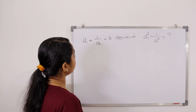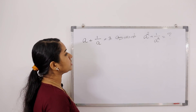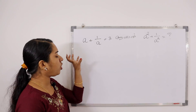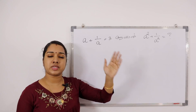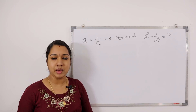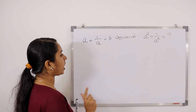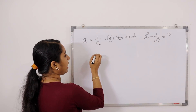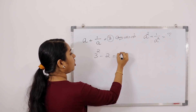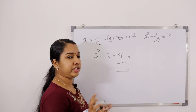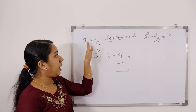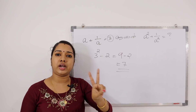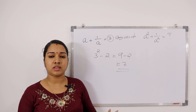Let's look at this: a plus 1 by a sum is 3. Find a squared plus 1 by a squared. We use the identity: a plus 1 by a whole squared equals a squared plus 1 by a squared plus 2. So a squared plus 1 by a squared equals 3 squared minus 2, which is 9 minus 2. A is equal to 5 in the same way — the answer is 7.